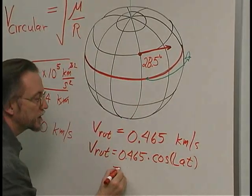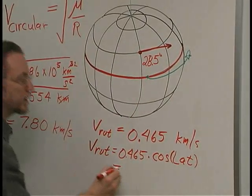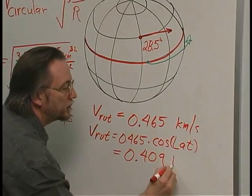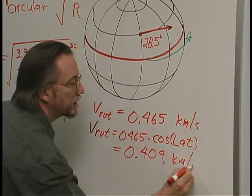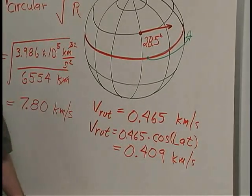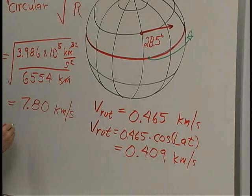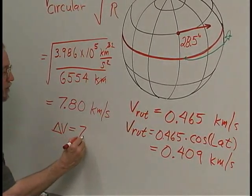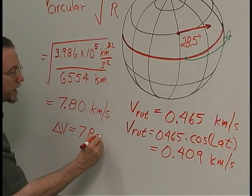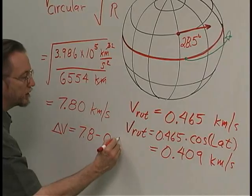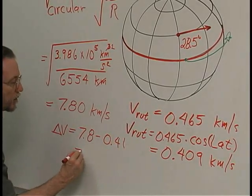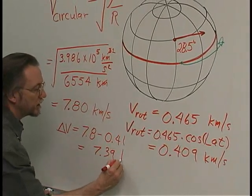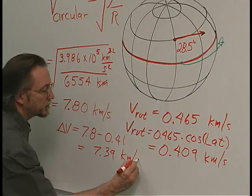Multiplying this out, we get 0.409 kilometers per second. And so our total delta V that we need to get into orbit is 7.8 minus 0.41 or 7.39 kilometers per second.